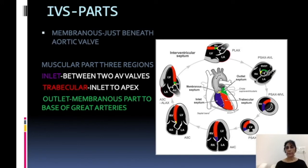Then we come to the parasternal short axis view. You can see the aorta and the right ventricular outflow tract. In this area, towards the right side near the tricuspid valve, this is the membranous part — shown in yellow. Then the green area is mainly the outlet part.